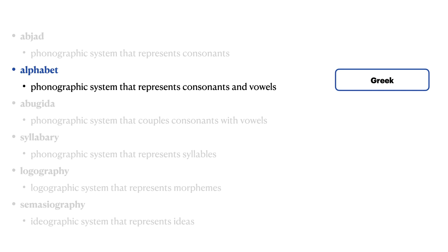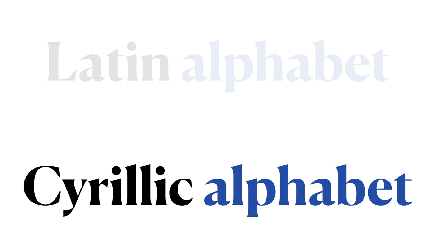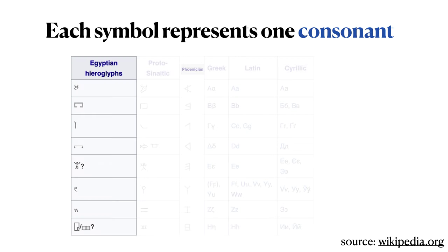An alphabet is a phonographic writing system that represents consonants and vowels. Consonants and vowels are each represented with stand-alone symbols. Greek is one alphabet; Latin and Cyrillic are two other alphabets. Let's look at the development of these three alphabets: Greek, Latin, and Cyrillic.